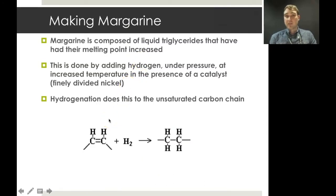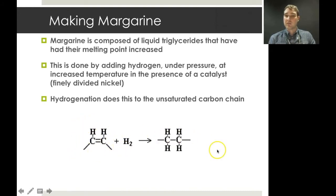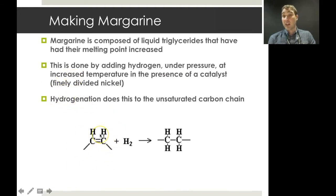Now let's talk about margarine production. If you have a liquid triglyceride, you can turn it into a solid triglyceride by hydrogenating the double bonds. By doing that you increase the melting point — you remove the kinks from the carbon chains, eliminating the change in angle and returning to relatively straighter chains. The more straight chains you have, the more solid the triglyceride will be. Hydrogenation adds a hydrogen to either end of the carbon-carbon double bond, very similar to bromination.